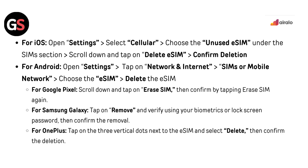For Google Pixel, scroll down and tap Erase SIM, then confirm by tapping Erase SIM again. For Samsung Galaxy, tap Remove and verify using your biometrics or lock screen password, then confirm the removal. For OnePlus, tap on the three vertical dots next to the eSIM, select Delete, then confirm the deletion.